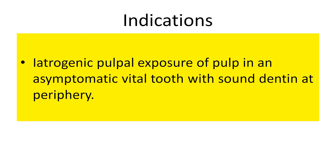The first indication is an iatrogenic pulpal exposure of the pulp in an asymptomatic vital tooth with sound dentine at the periphery. Iatrogenic means the exposure was caused by the clinician — for example, during cavity preparation a pinpoint exposure occurs. In that case, you are working under rubber dam, conditions are aseptic, and while removing caries this pulpal exposure happened, so you can go ahead with direct pulp capping. The tooth should have no symptoms like pain or swelling.